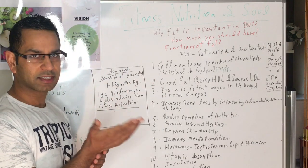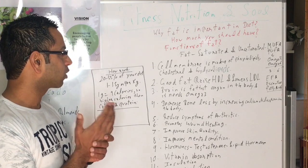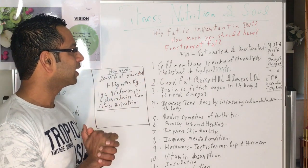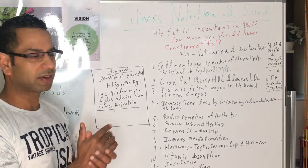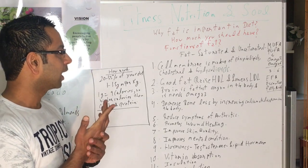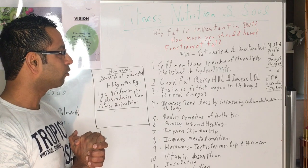Saturated fat is the one which doesn't have any double bonds and is found in coconut oil and butter in solid form. Unsaturated fat is found more in liquid form.